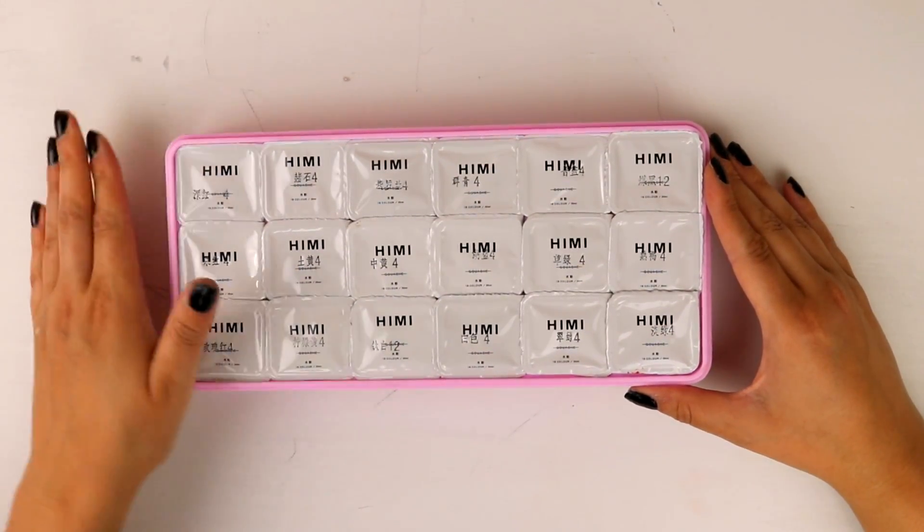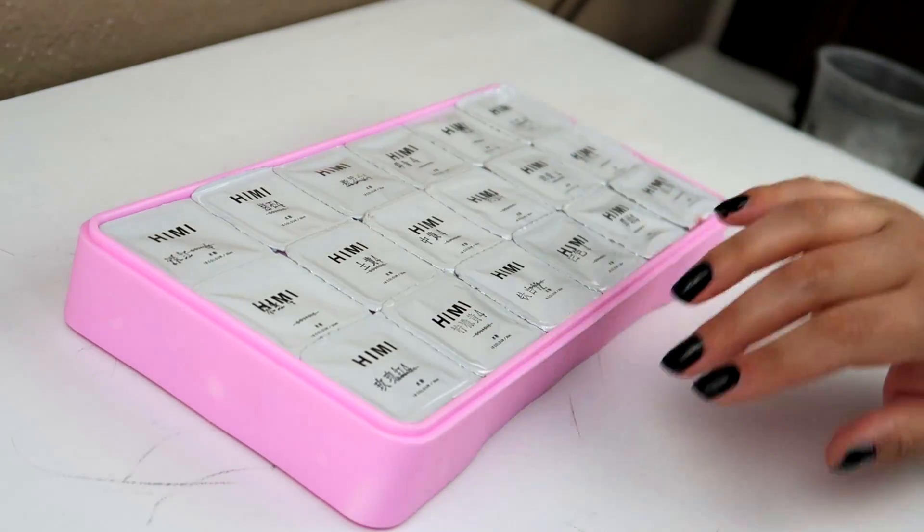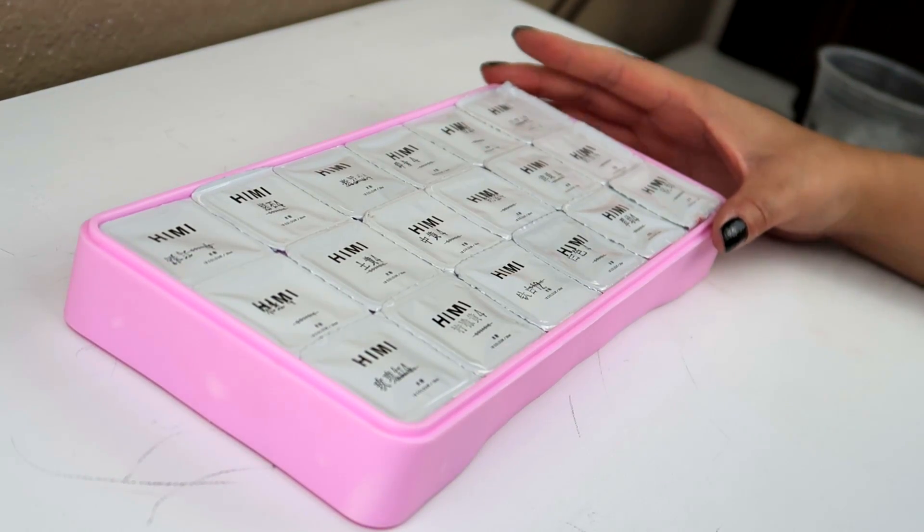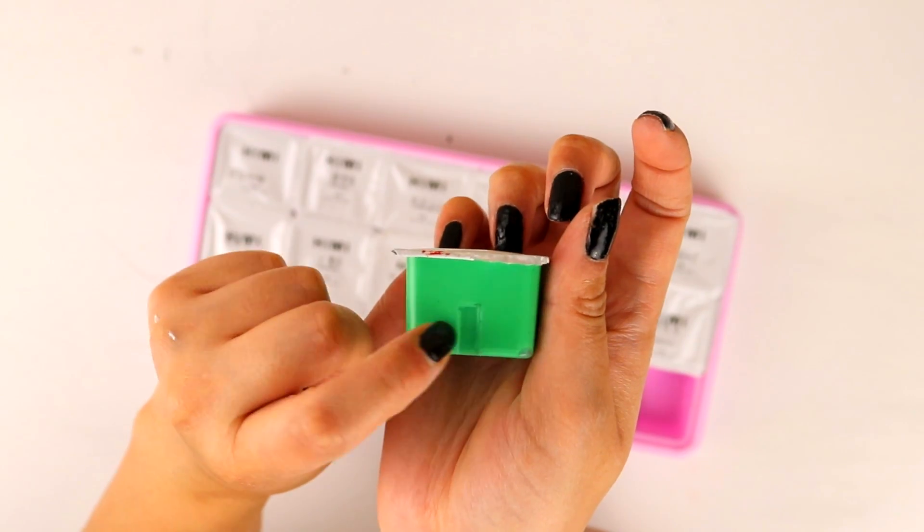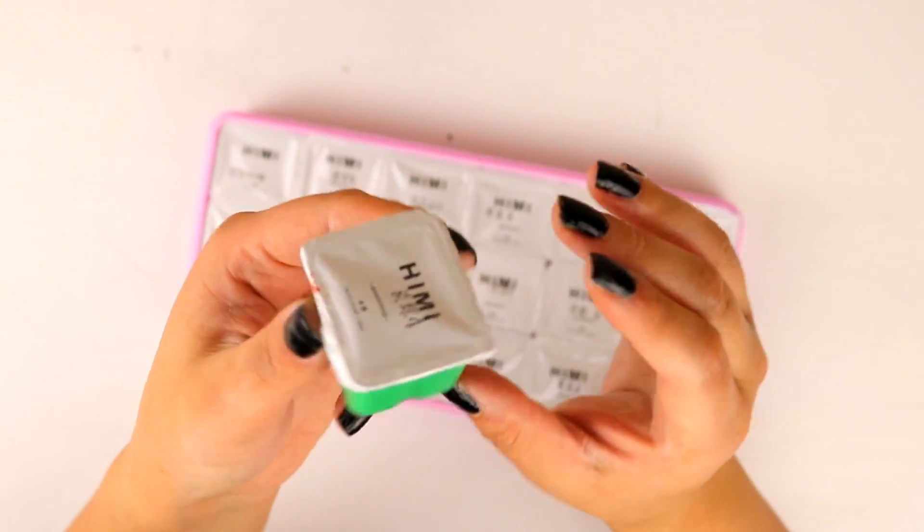And here's the jelly paint. Wow. This is so weird. It looks just like food or something. So here's what the little cups look like. They come with little divots like this, so they don't slide around. They lock into place.